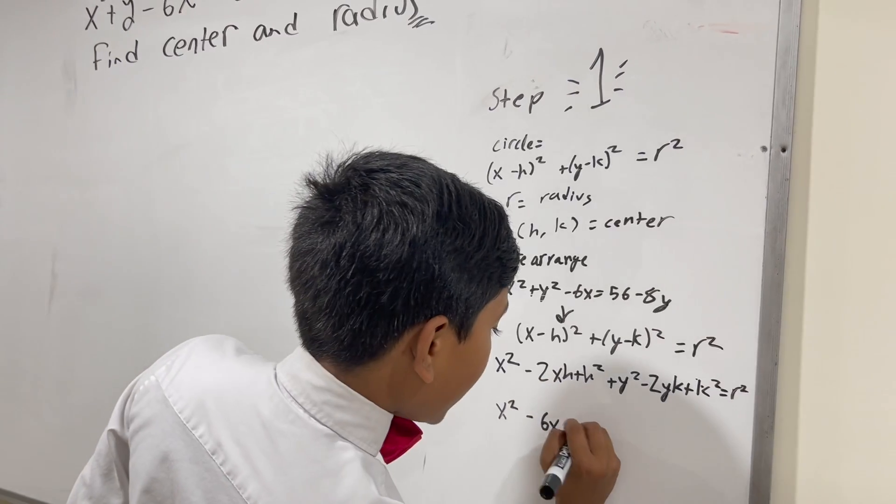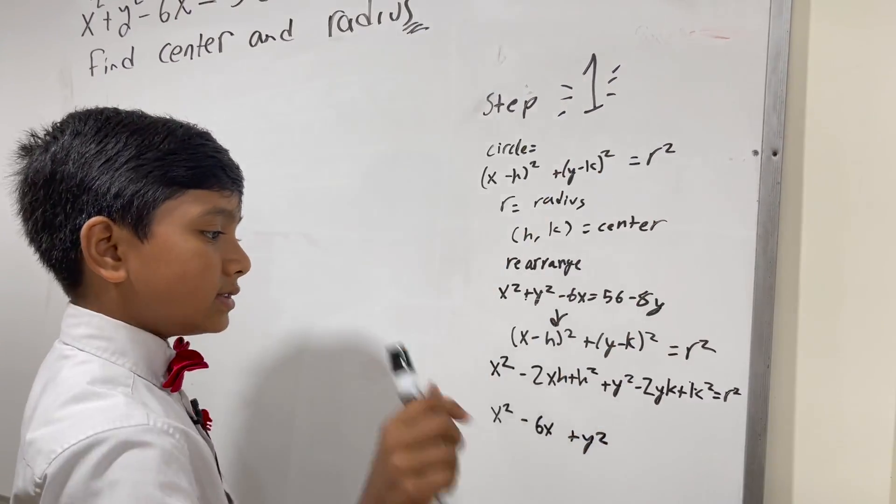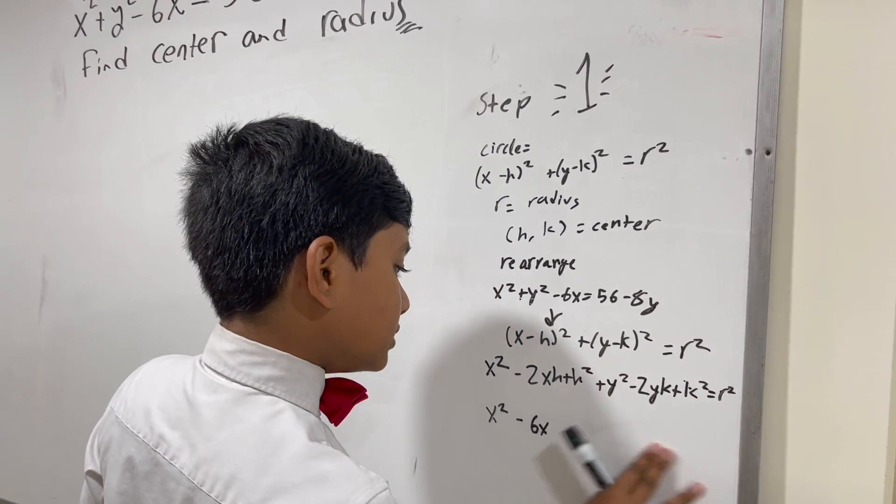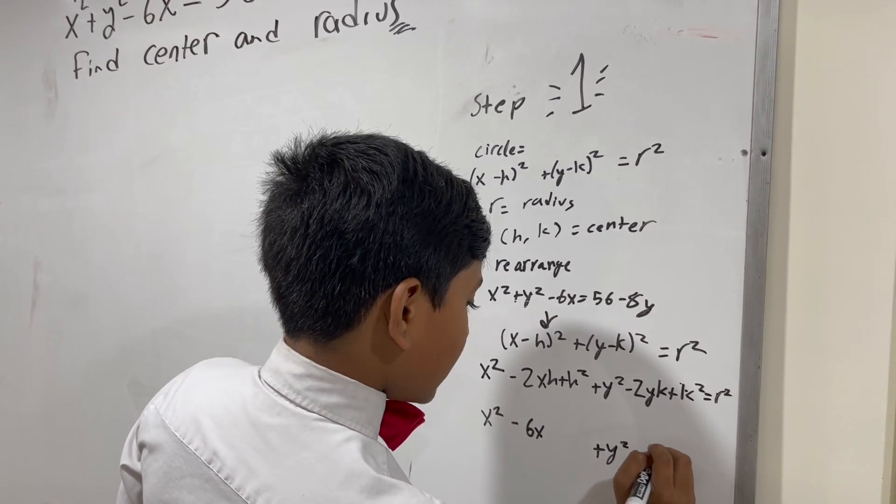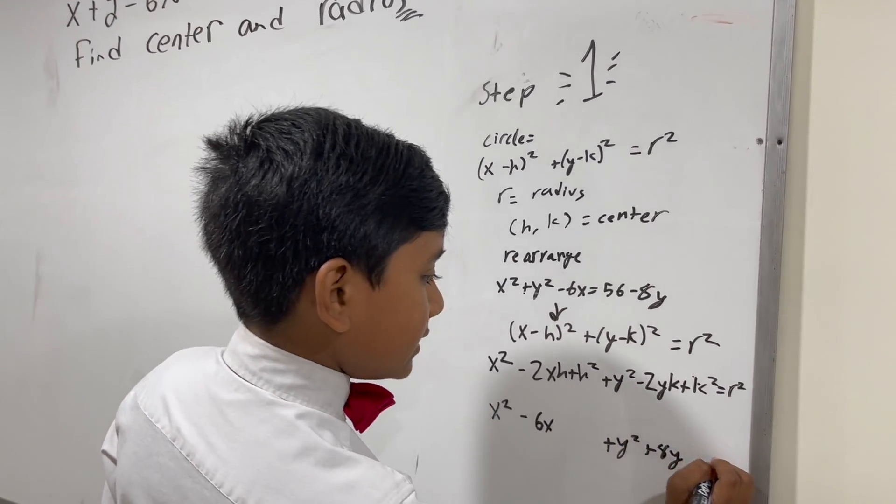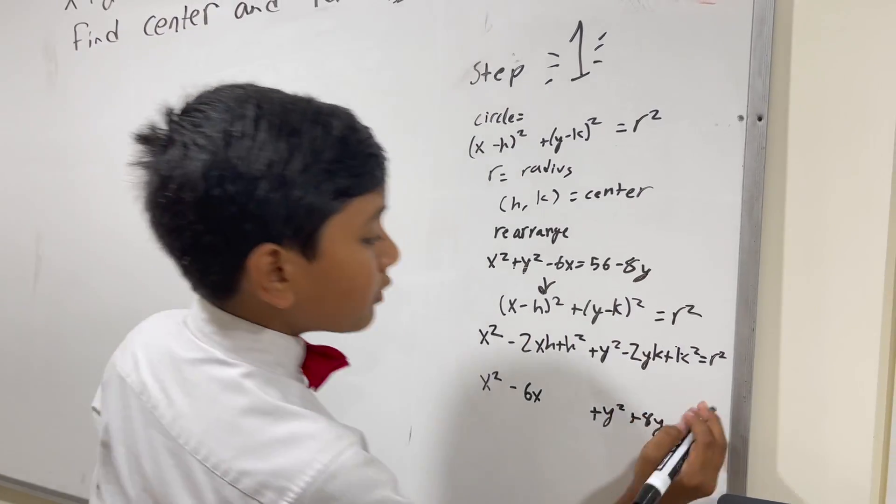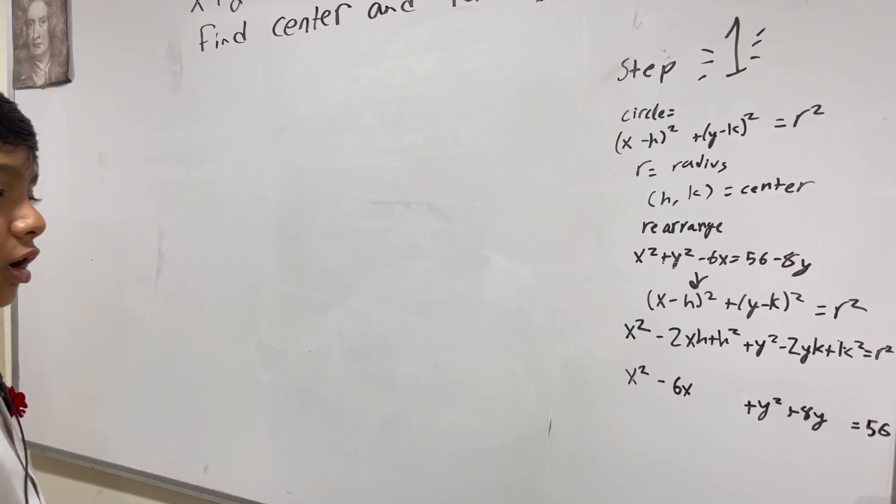And then, you have Y squared. And we need to add 8Y to both sides to get this. Plus, I should probably align this so it looks better. Plus 8Y is equal to, now, on the left side, because we added 8Y, we only have 56 left. All right.